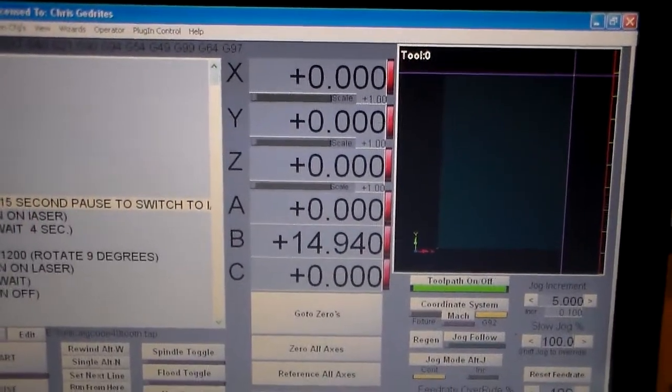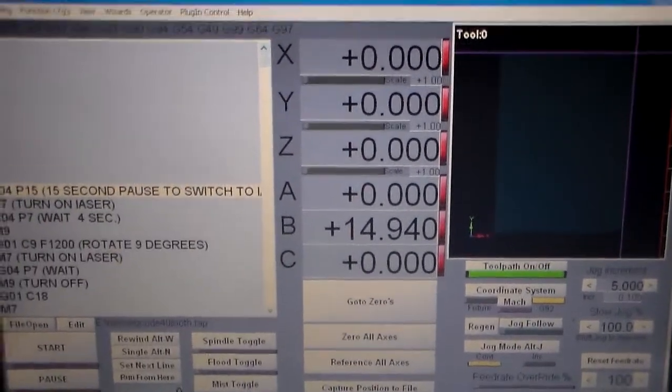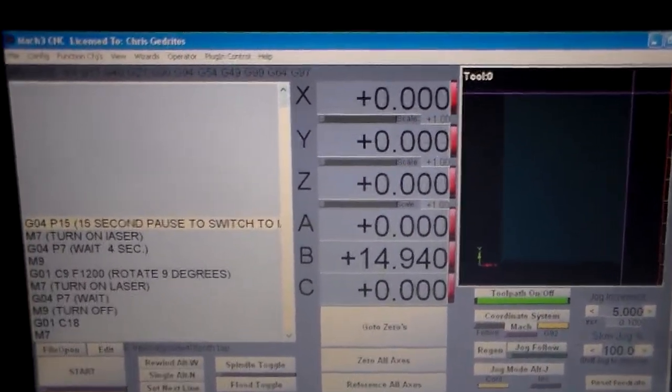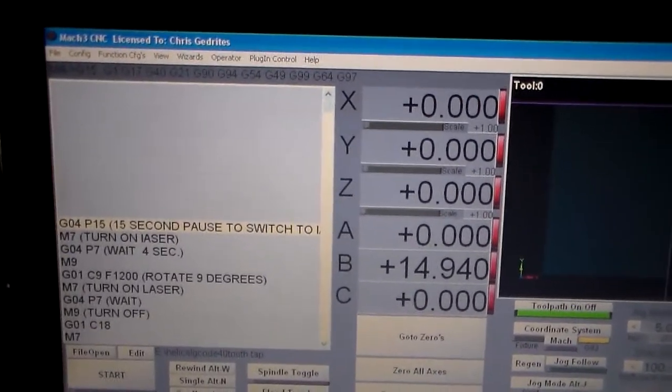And so with 15 degrees, it doesn't come quite out to be correct, but 14.94 is close enough to 15 degrees, and if all the other gears are made the same way, then it's not a problem.